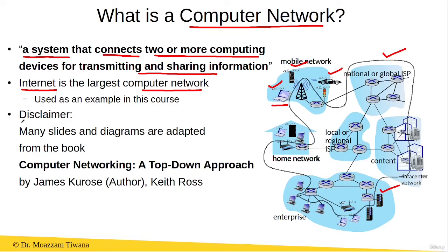There is a disclaimer: many slides and diagrams in this course have been adopted from the book 'Computer Networking: A Top-Down Approach', written by James Kurose and Keith Ross. Wherever material has been taken from this book, the copyright belongs to these authors.